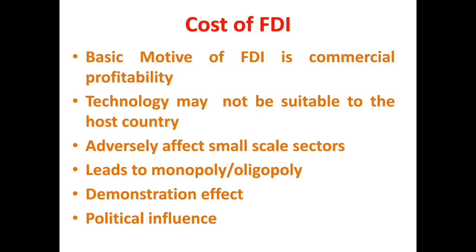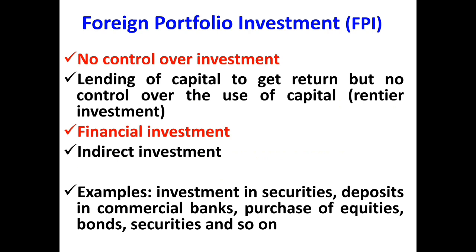FDI can lead to a demonstration effect and can distort the consumption pattern of the developing country. Since MNCs are the most important vehicle of foreign direct investment, they can also influence politically and can lead to lobbying in the host country. Moving to the second type — foreign portfolio investment — it is an investment in which the owner of the capital does not have control over the investment. It is merely lending of capital to get a return, with no control over the use of capital. That is why it is also known as rentier investment. It is an indirect, financial investment. Examples include investment in securities, deposits in commercial banks, purchase of bonds, debentures, and equities.